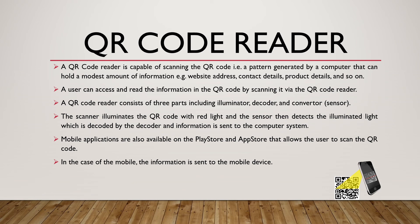QR code reader. A QR code reader is capable of scanning a QR code — a pattern generated by a computer that can hold a modest amount of information such as web addresses, contact details, and product details. An example of a QR code is shown in the bottom right corner. A user can access and read the information by scanning it via the QR code reader, which consists of three parts: illuminator, decoder, and converter. The scanner illuminates the QR code with a red light; the sensor detects the illuminated light which is decoded by the decoder, and the information is sent to the computer. Mobile applications on the Play Store and App Store also allow users to scan QR codes.